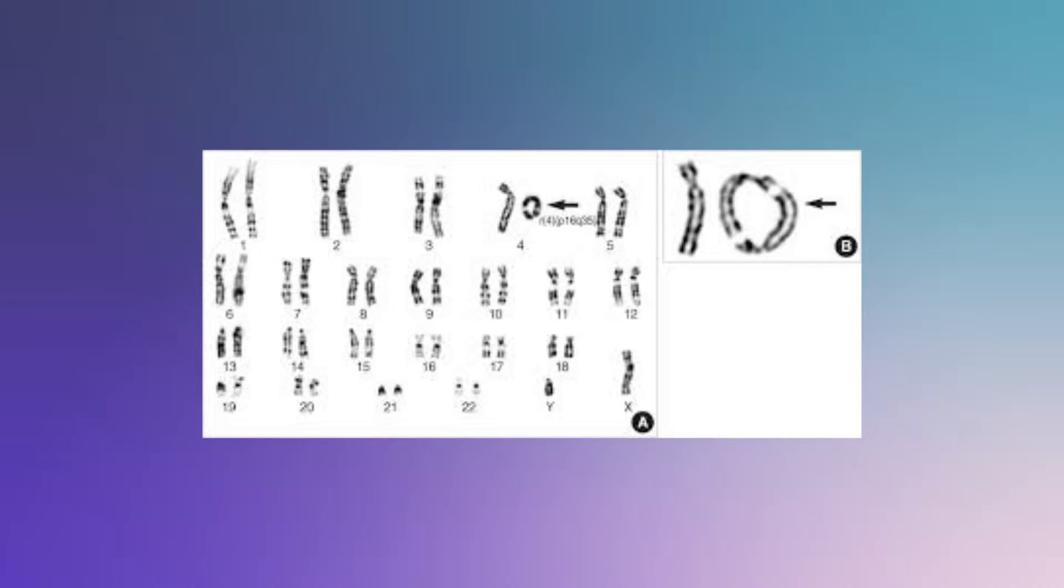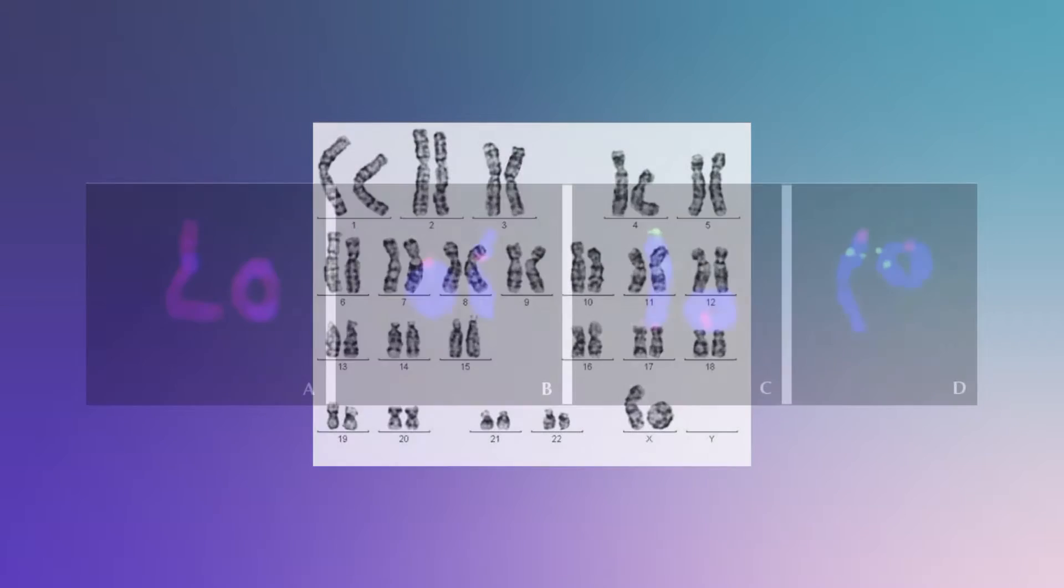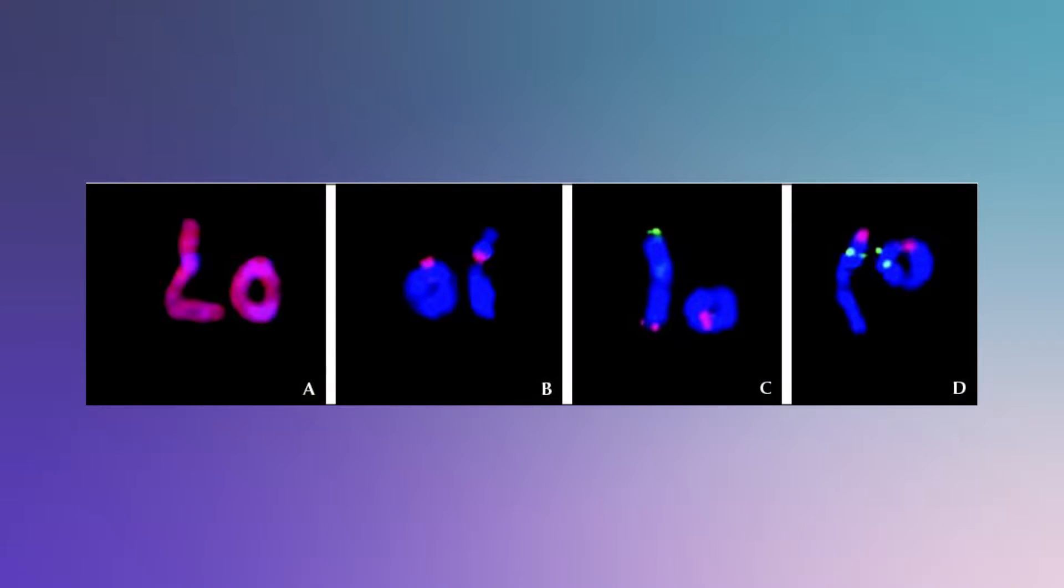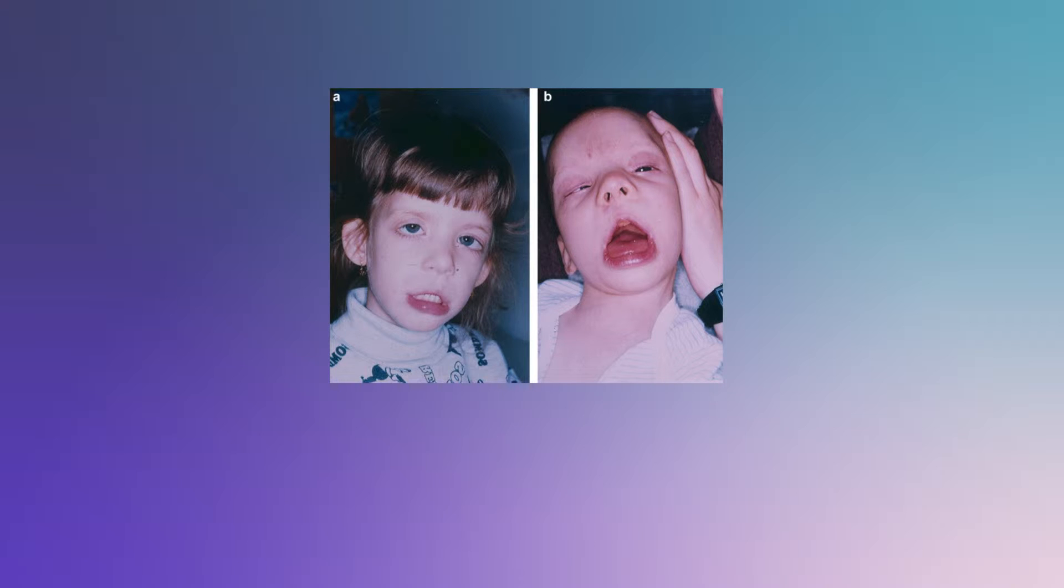Since every one of our 23 couples of chromosomes, numbers 1 to 22 and the XY chromosome, contain different genetic code, these conditions caused by ring chromosomes are directly correlated to the chromosome they affect. Here are several examples of genetic disorders associated with ring chromosomes. Ring 1: facial dysmorphism, growth and intellectual developmental disorder.